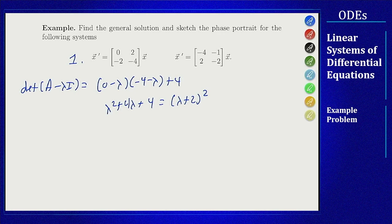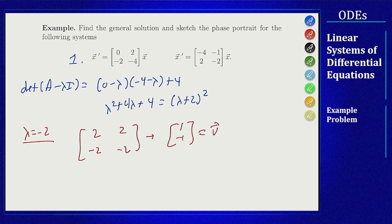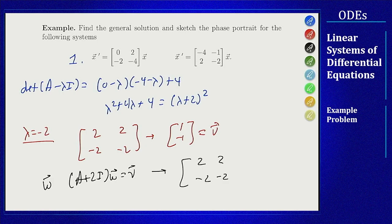For this eigenvalue, if I add 2 to the diagonal I will see 2, 2, minus 2, minus 2, which means a possible eigenvector here is 1, minus 1. I only found one eigenvector so I have to go through the generalized eigenvector approach to find a second solution. I want my w vector which is going to solve A plus 2I times w equals v. For matrix form, 2, 2, minus 2, minus 2 equals 1, minus 1.